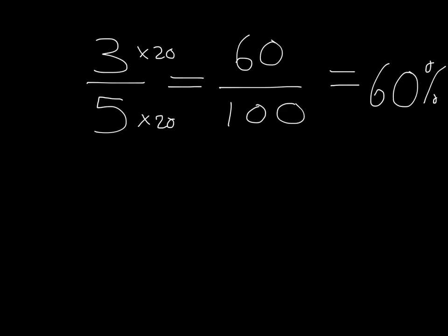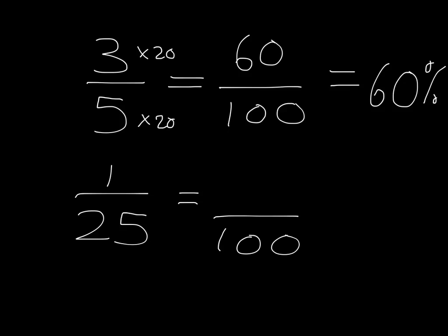Try for yourself: what is 1 over 25 written as a percentage? Pause the video now and check that you can do this. Okay, you should immediately have known that you want to get it as a fraction over 100. You've multiplied 25 by 4 to get to 100, so you must do the same to the top to get an equivalent fraction — you get 4 over 100. So 1 over 25 is the same as 4 percent.